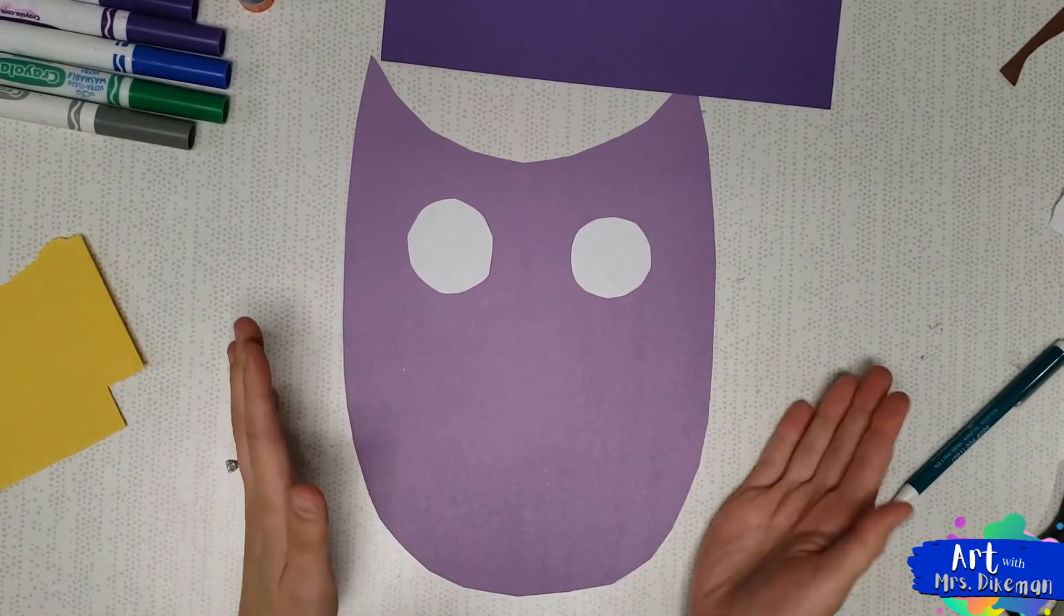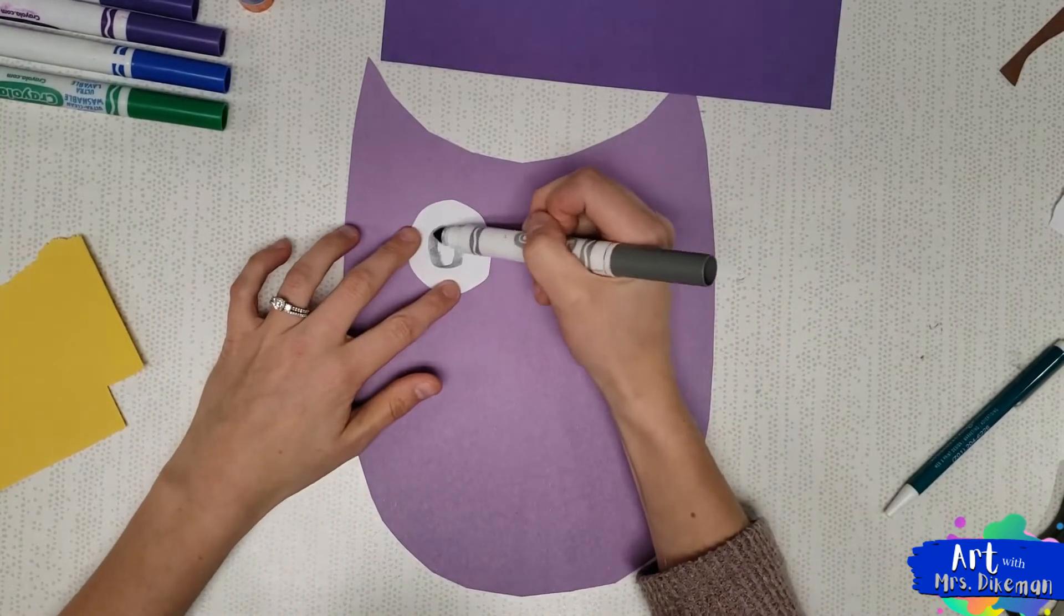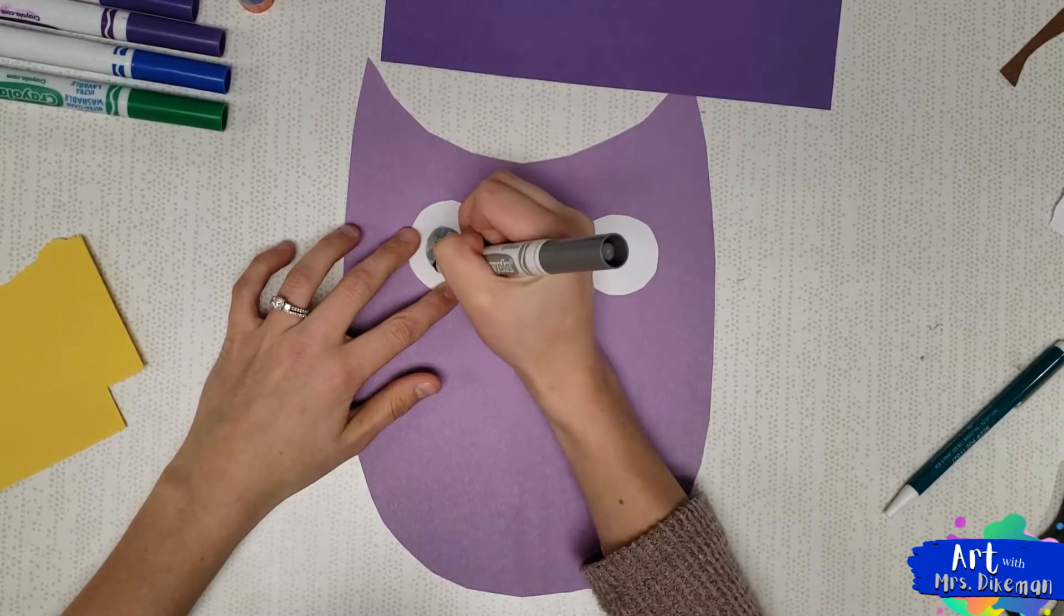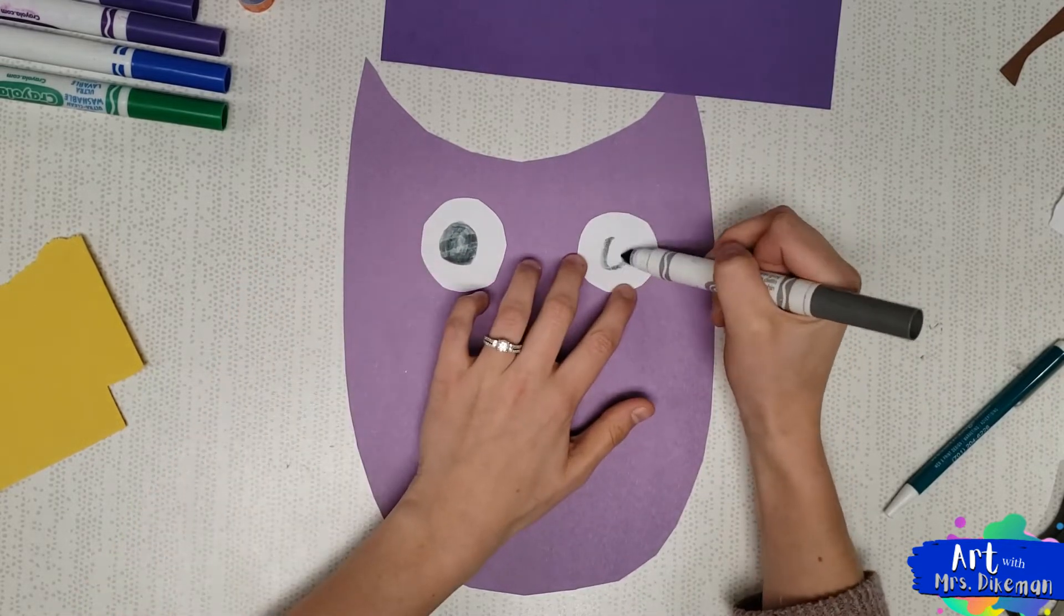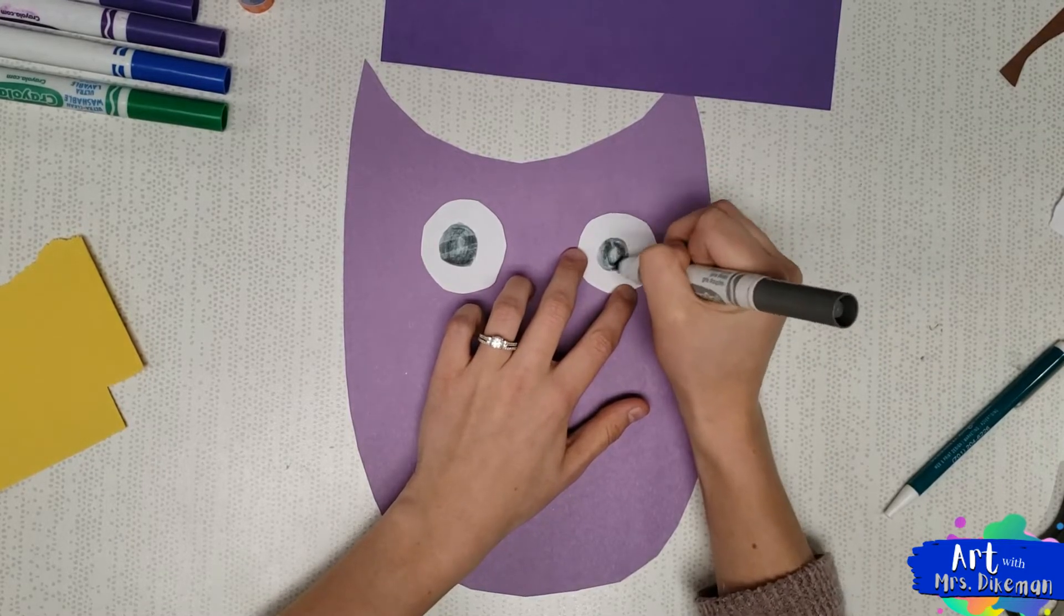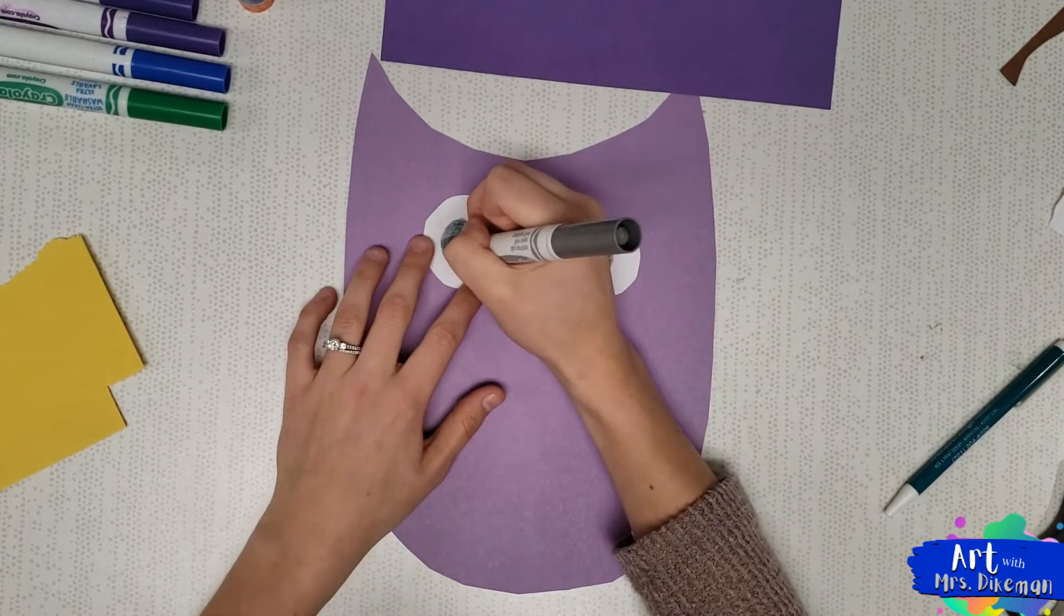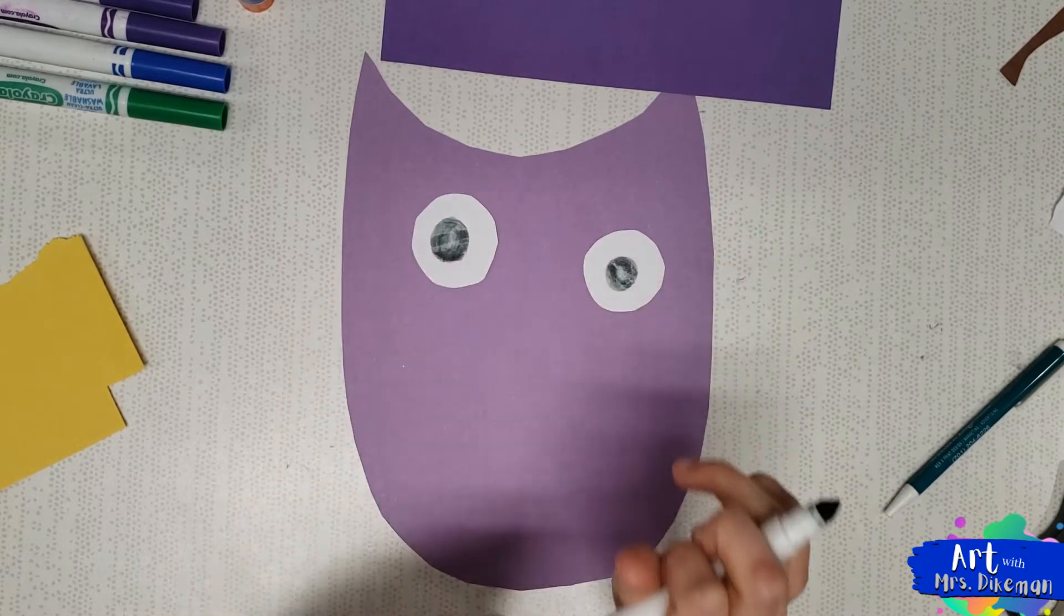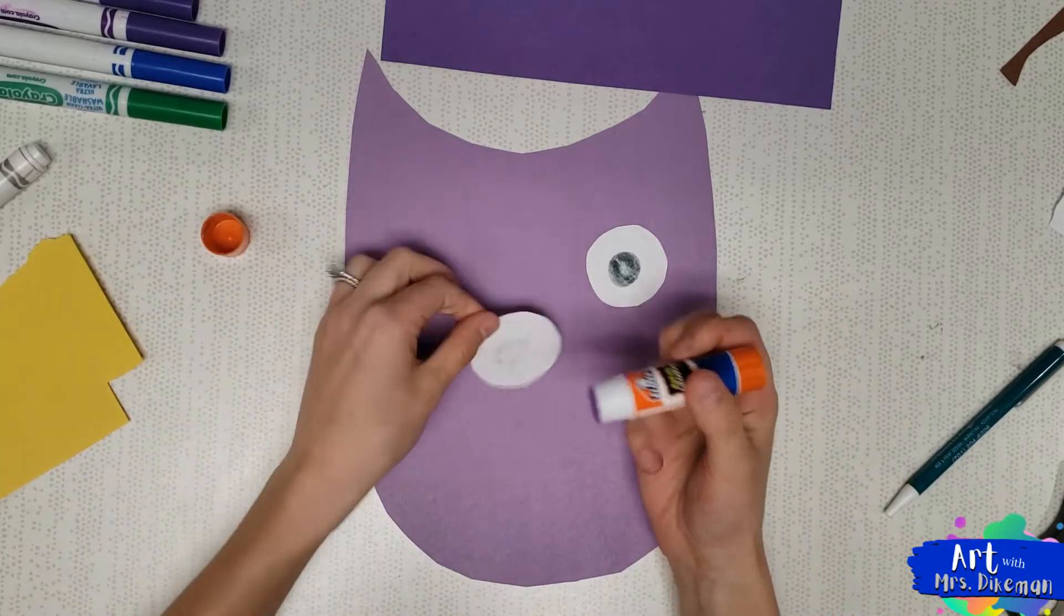Here are my eyes. With a marker, I'm using a darker gray, you can draw in the pupil. The pupil is the center part of the eye. For this I'm just making some nice circles. When you are done, you may glue down your eyes so they stay in place.